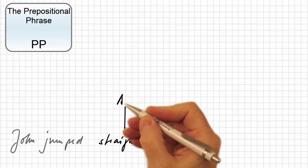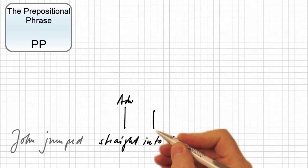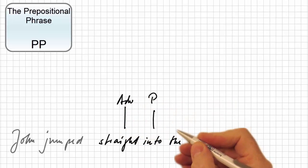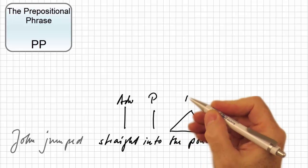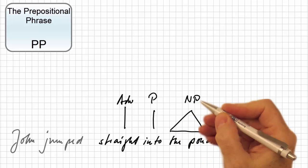Clearly, straight is an adverb, into is a preposition, and the pond is a noun phrase that consists of a determiner and a noun, but here it suffices not to analyze the noun phrase any further, but to present it as a triangle.